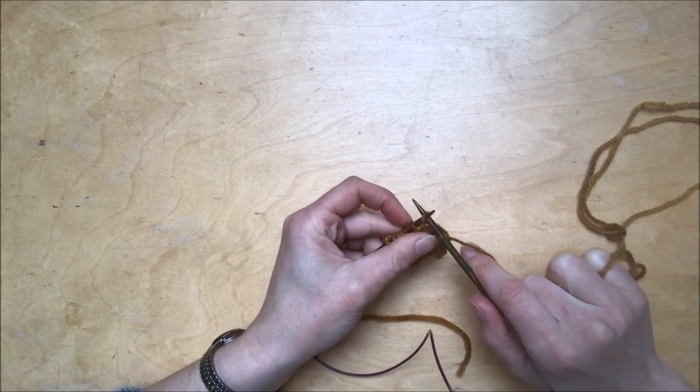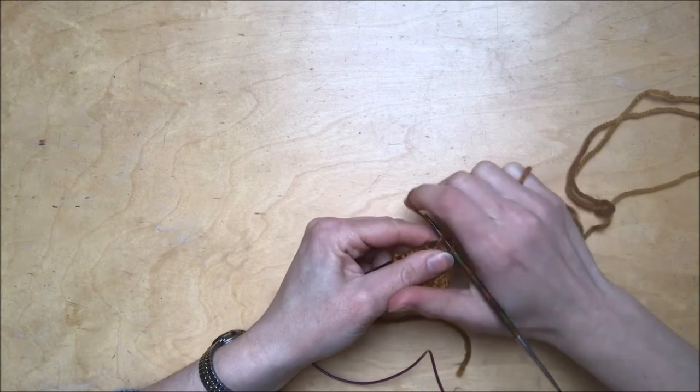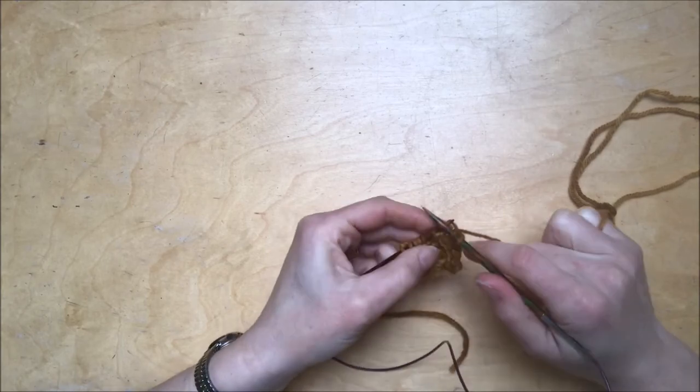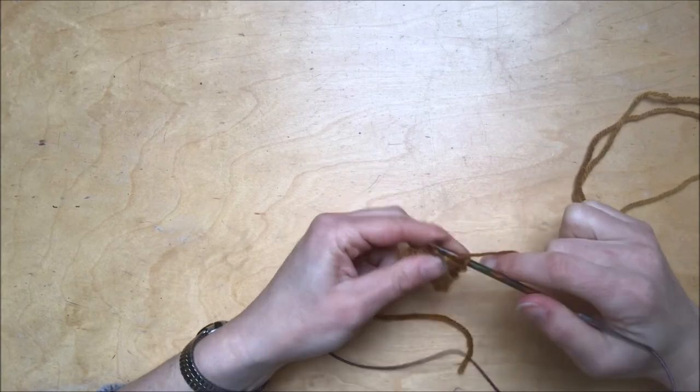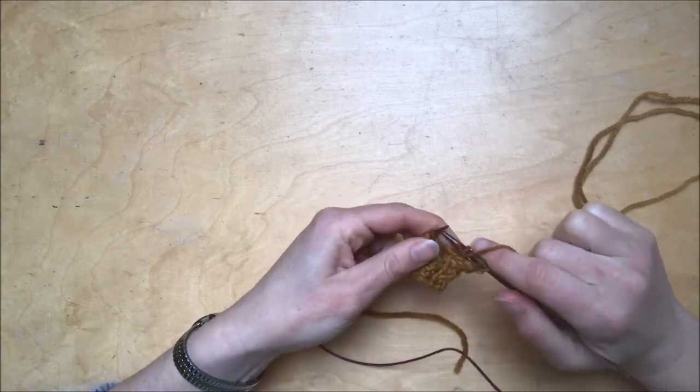So I'm going to knit into the front leg of my stitch, which will correctly mount it and will prevent my stitch from becoming twisted. And then I'll just continue working the rest of my stitches as normal.